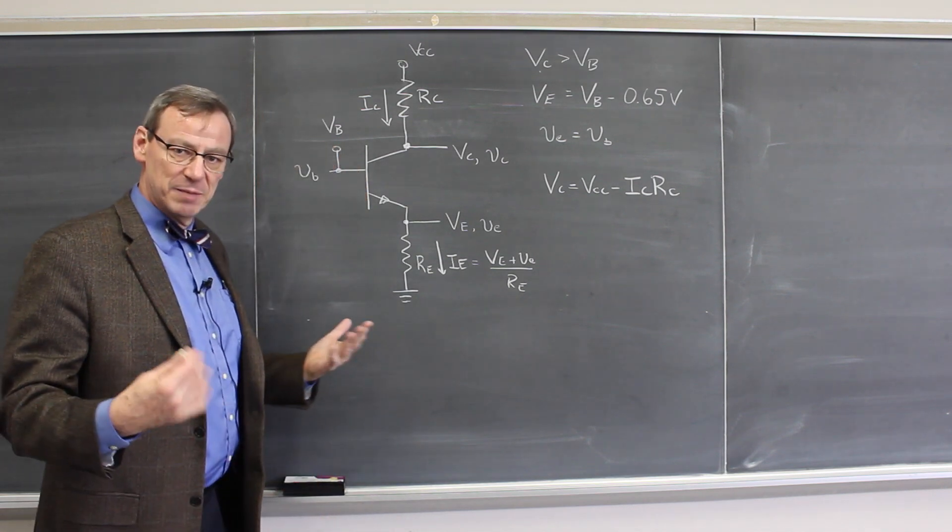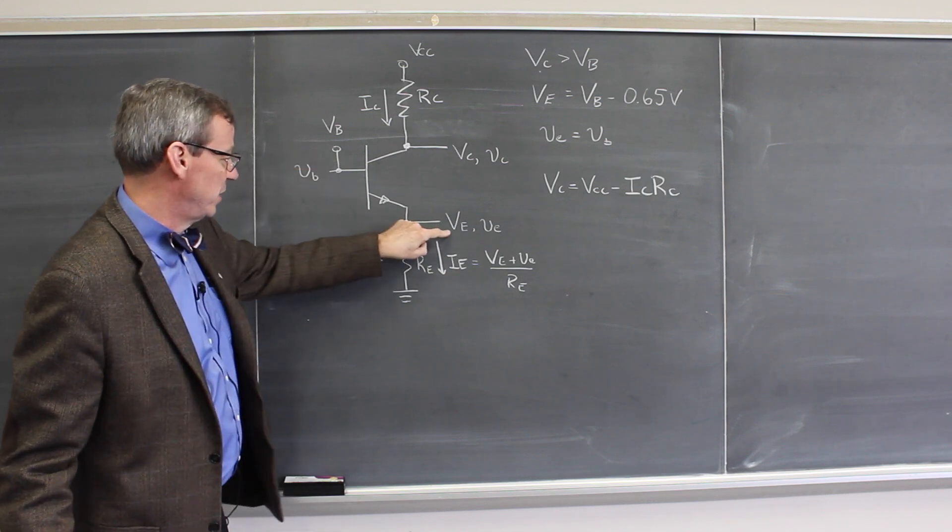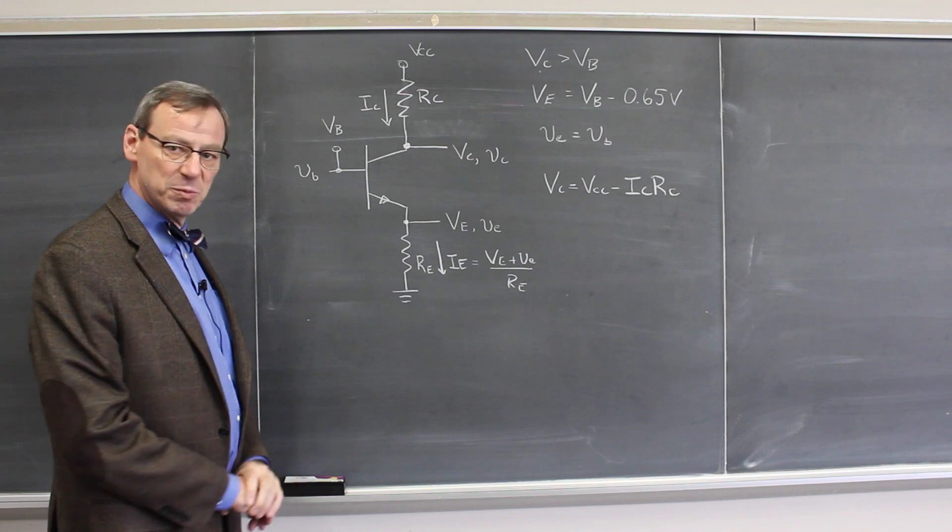That's nice there, that bias is this. And we still have the same relation, whatever we set the base voltage, the emitter voltage is 0.65 volts below that.